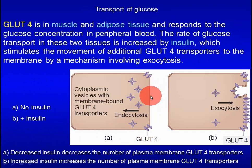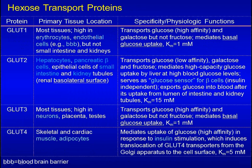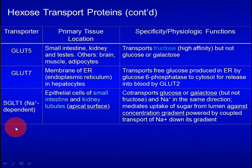GLUT4 is expressed in muscle and adipose tissue. The number of GLUT4 on the plasma membrane is controlled by insulin. Without insulin signaling, GLUT4 is found in cytoplasmic vesicles. When insulin signaling arrives, GLUT4 is translocated to the cell membrane. This is a high-yield topic. There are also sodium-dependent glucose co-transporters that transport glucose and sodium in the same direction, required for absorption of glucose in the intestine and reabsorption of glucose in the kidney.